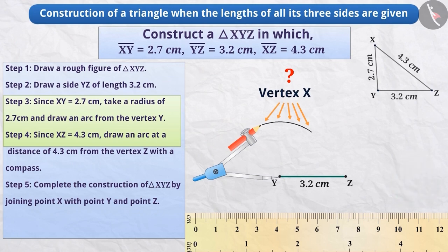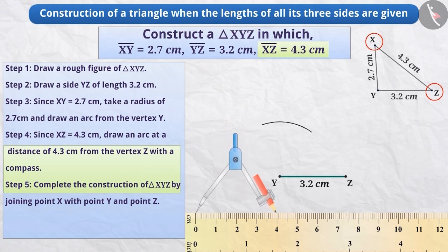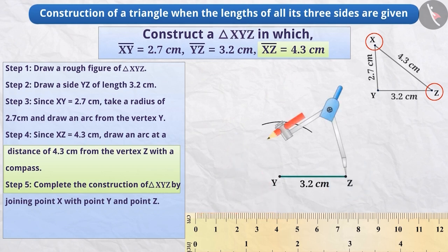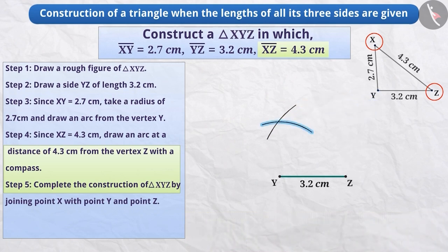Let's understand this in Step 4. The length of the side ZX is 4.3 cm. That is, the vertex X is at a distance of 4.3 cm from the vertex Z. So, now we will open the compass and measure 4.3 cm on the ruler. Taking vertex Z as the center, we will draw another arc with radius 4.3 cm which intersects the arc drawn from the vertex Y. The obtained intersection point is vertex X of the triangle XYZ.